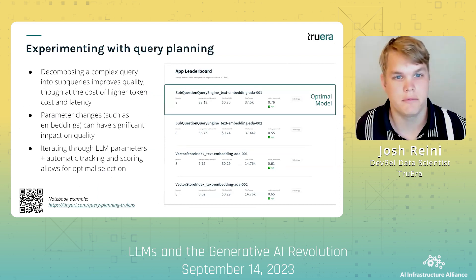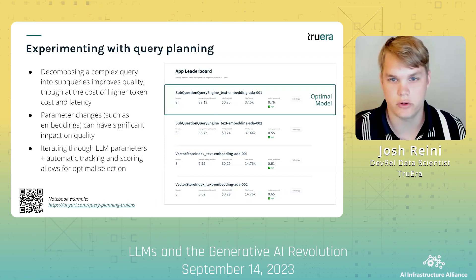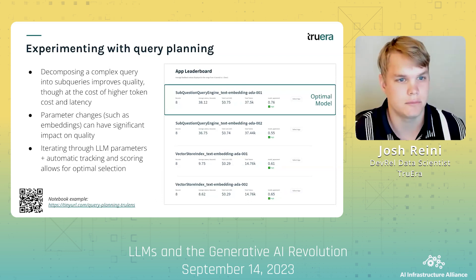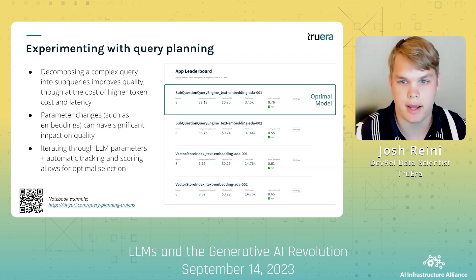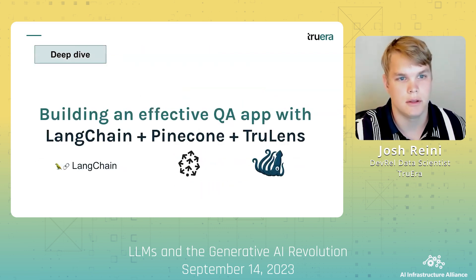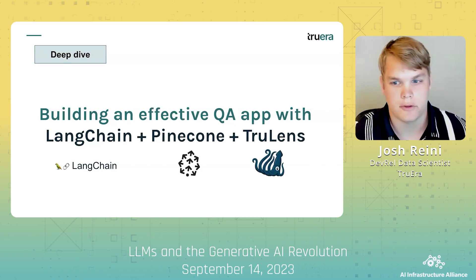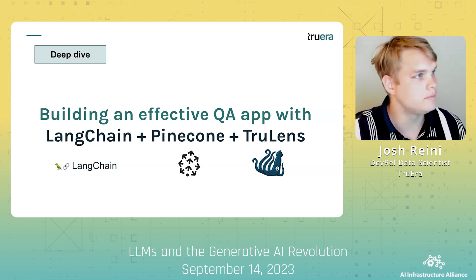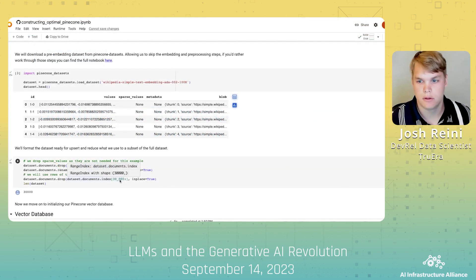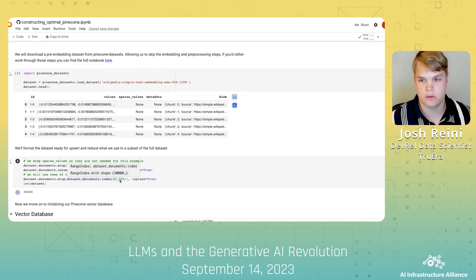As you iterate through configurations and compare query planning strategies, TrueLens can be especially useful in tracking the results of these experiments. Tracking evaluations alongside cost and latency lets us easily compare different app versions and select the best one. Now we can do a deep dive on building a RAG QA app on the canonical LLM stack — in this example, we're going to build a RAG QA application on top of a Pinecone database and use TrueLens for evaluations.